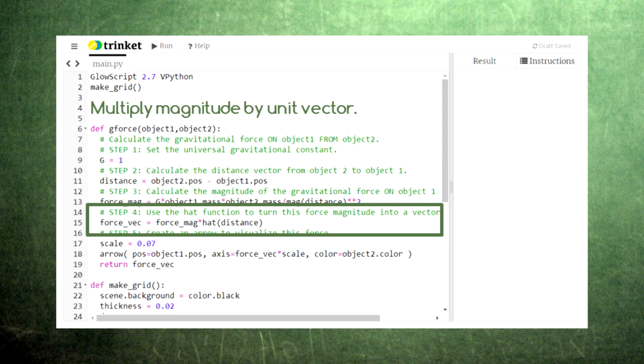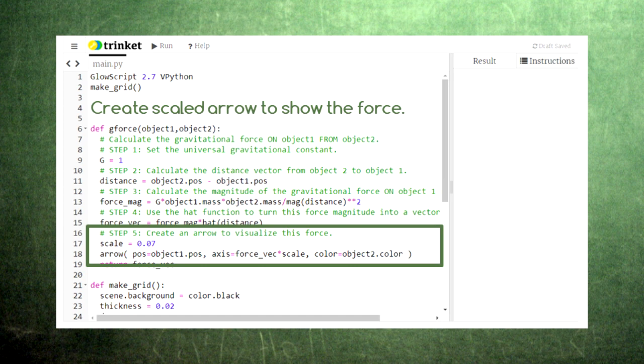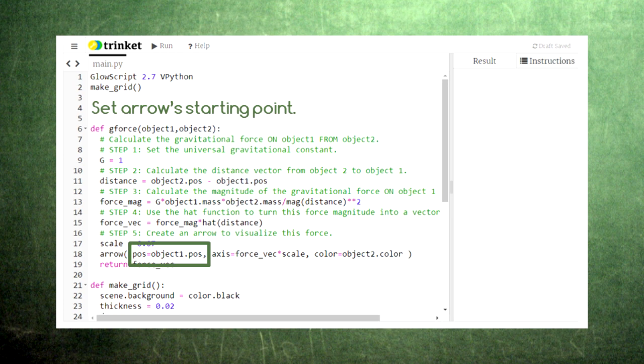After calculating this force vector, we create an arrow to represent the force of gravity. Creating an arrow requires three pieces of information. First, we need this arrow's starting point, which is going to be at the center of object 1 since it's experiencing this force.